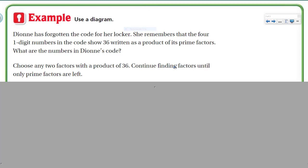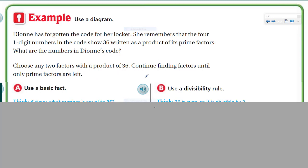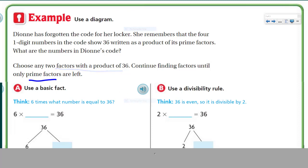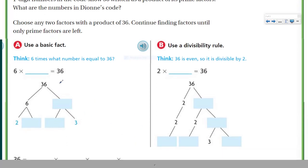We have another example using a diagram. Dionne has forgotten the code for her locker. She remembers that the four one-digit numbers in the code show 36 written as a product of its prime factors. What are the numbers in Dionne's code? The approach: choose any two factors with a product of 36, then continue finding factors until only prime factors are left. This sounds like the factor tree — yes, this is the factor tree!